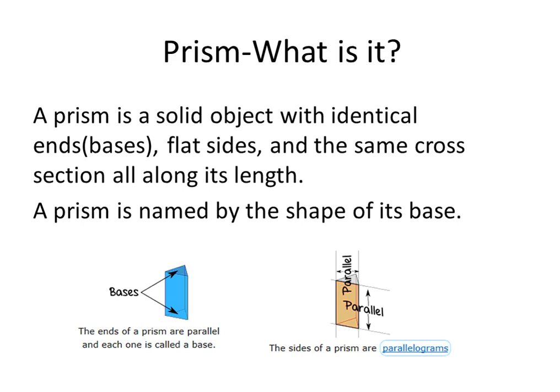A prism, what is it? A prism is a solid object with identical ends or bases, flat sides, and the same cross-section all along its length.